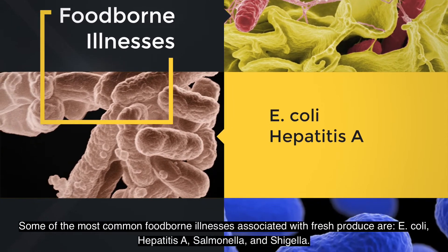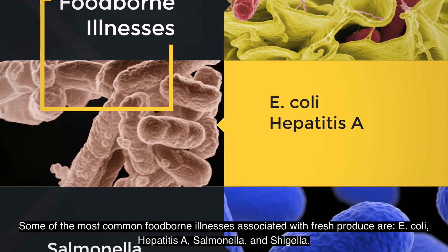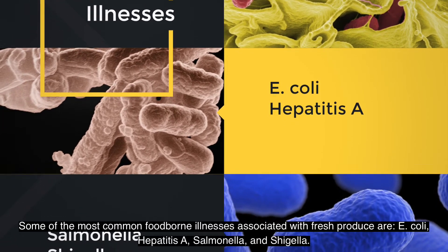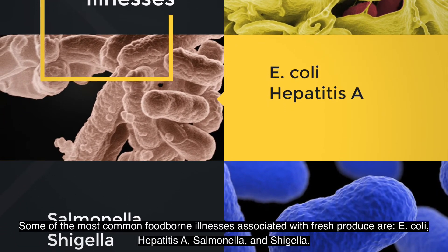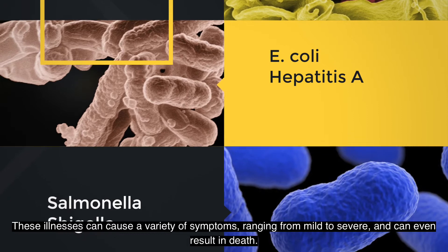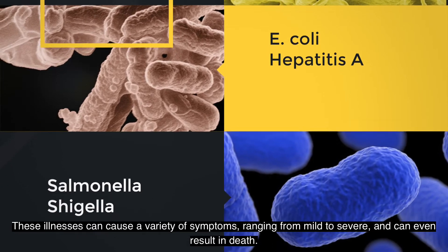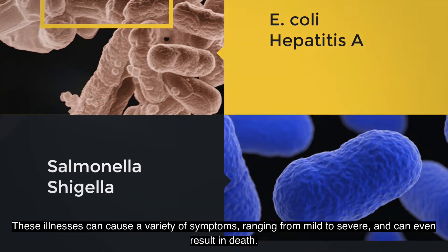Some of the most common foodborne illnesses associated with fresh produce are E. coli, hepatitis A, salmonella, and shigella. These illnesses can cause a variety of symptoms, ranging from mild to severe, and can even result in death.